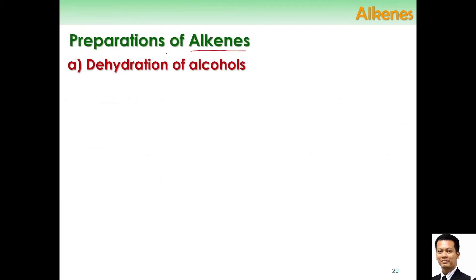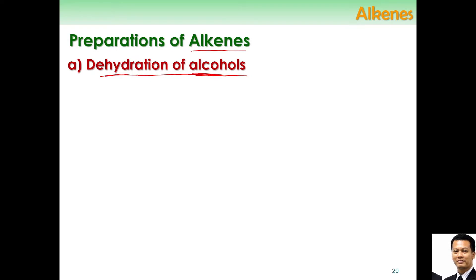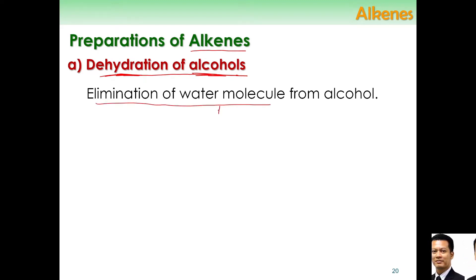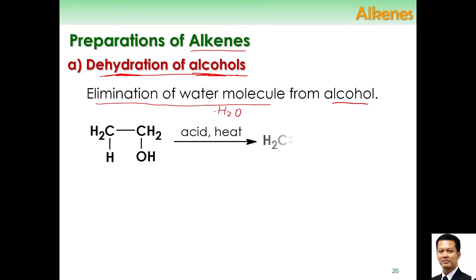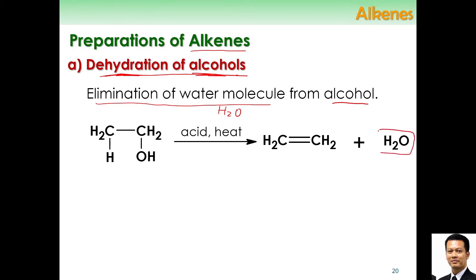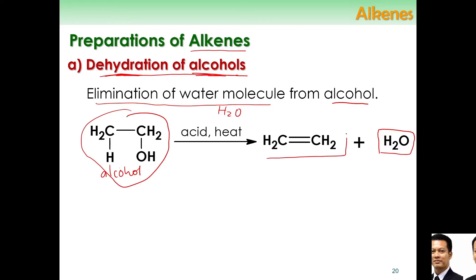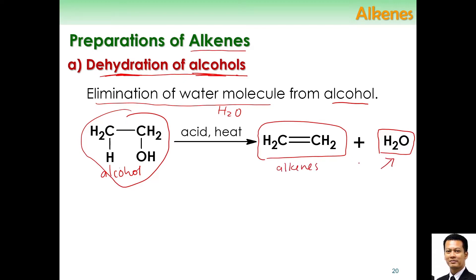Alkene can be prepared by a process called dehydration of alcohol. It means that you have alcohol and then you dehydrate that alcohol, so you get alkene. This means that you are going to eliminate a water molecule, H2O, from the alcohol. You can see the water that is being eliminated. This is the alcohol that you are going to dehydrate and it will form alkene. This is the alkene and this is the water that has been removed. Dehydrated means removing water.